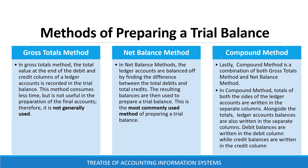There are three methods of preparing a trial balance: the gross total method, the net balance method, and the compound method. In the gross total method, the total value of the debit and credit columns of the ledger account is recorded in the trial balance. This method consumes less time, but it is not useful in preparation of final accounts. Therefore, it is not generally used.